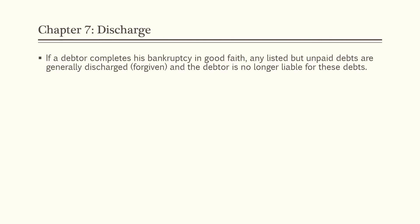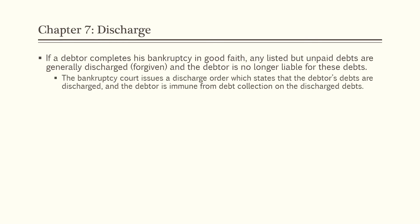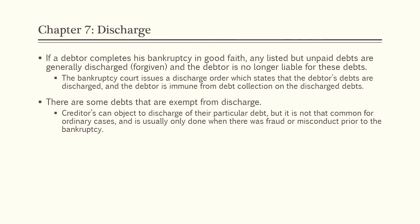After creditors are paid and the bankruptcy is finished, the debtor receives a discharge in Chapter 7. If the debtor completes the bankruptcy in good faith, any listed but unpaid debts are generally discharged — forgiven — and the debtor is immune from debt collection on those debts. The bankruptcy court issues a discharge order. Some debts are exempt from discharge, and creditors can object to discharge of their particular debt, though this is uncommon in ordinary cases and usually only done when there was fraud or misconduct prior to the bankruptcy.